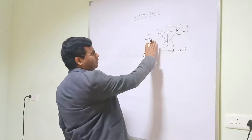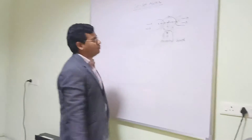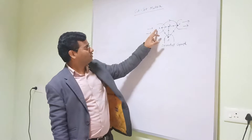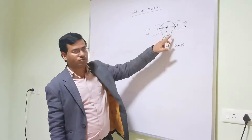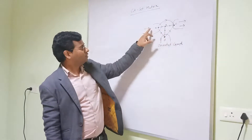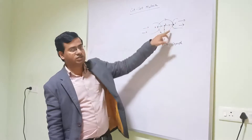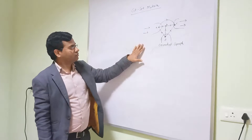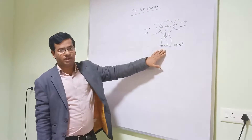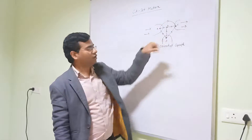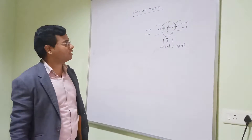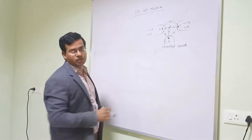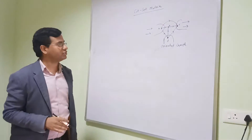First, see how many nodes are in this graph. In this graph there are four nodes. The nodes are A, B, C, and D. Now this graph is an oriented graph. Why is this oriented? Because all the directions are specified in all the branches.